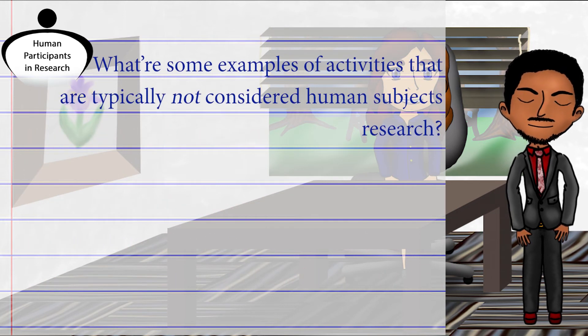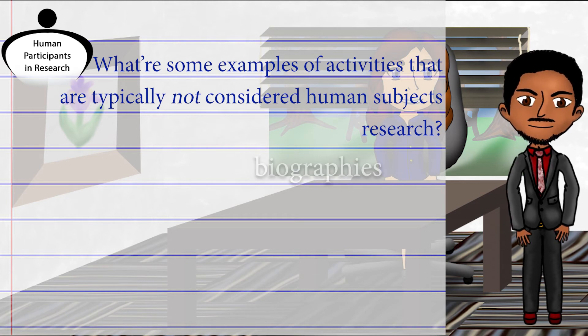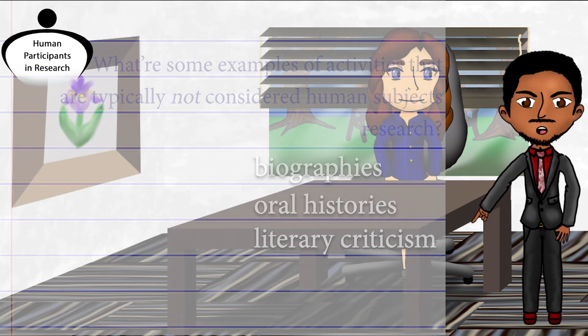What are some examples of activities that are typically not considered Human Subjects Research? Biographies, oral histories, and literary criticism.